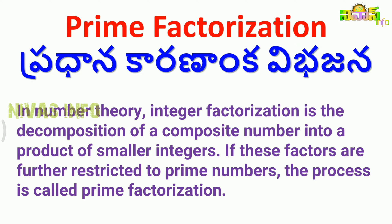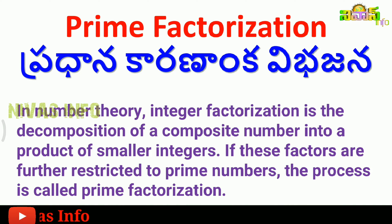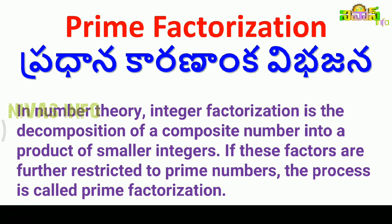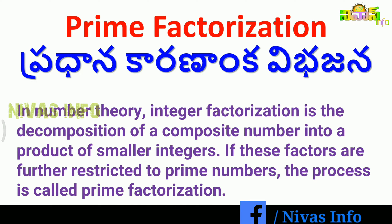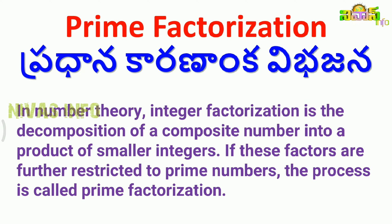In this definition, we have to work with composite numbers and do the decomposition. Why? Because there are only two factors in prime numbers. Prime numbers have just two factors. Therefore, if we need to factor further, we work with composite numbers and take the decomposition — breaking it into smaller parts.